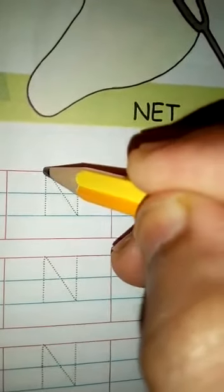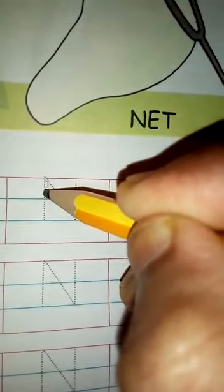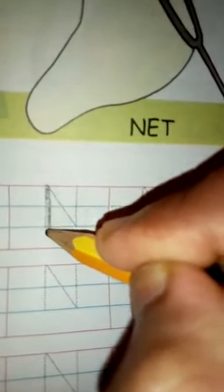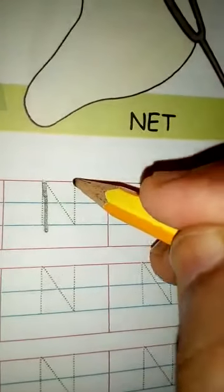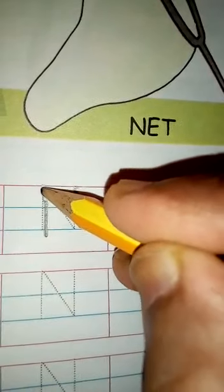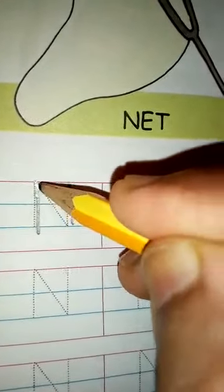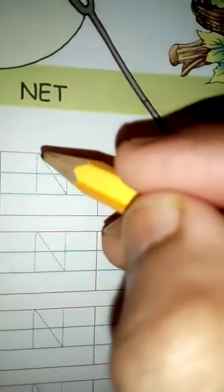So we are going to write here today N for nest. Now with the help of two standing lines and only one slanting line we'll make this alphabet. You see here, on the first three lines. On the first three lines you will make one standing line first, next to that one more standing line. And then from the first dot to this dot you will join and make another slanting line.